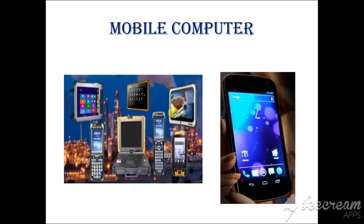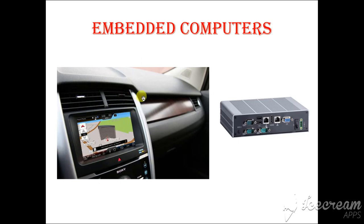This is the mobile computer. This is the small embedded computer — you can see it is used in bikes and four-wheelers, such as cars, for display and sound functions. This is the embedded computer. Thank you very much. Tomorrow I will tell you about the fifth generation computer.